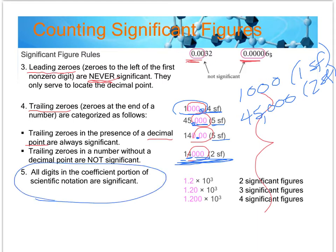In scientific notation, the numbers in the coefficient portion are always significant, regardless of whether they're zeros or non-zeros. The exponent part you ignore when counting sig figs — it has nothing to do with the precision of the equipment or the measurement. So a number in scientific notation can have two, three, or four sig figs depending on the coefficient.